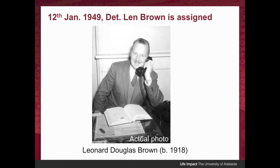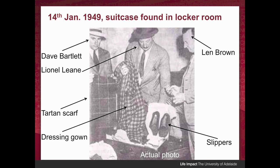One of the first things they did was check the Adelaide railway station locker room for unclaimed suitcases — a reasonable hypothesis. And lo and behold, they found a case that was checked in the night before the man died. It correlated in time, also correlated in the size of clothing — it fitted the guy — and there was some unusual cotton thread that matched the clothing he was wearing, which was also in the suitcase. So they felt there was a good match between the suitcase and the man.